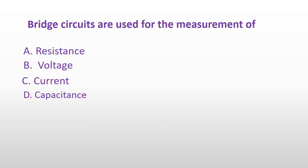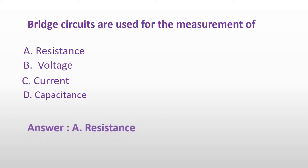Wheatstone bridge circuits are used for measurement of: Option A: Resistance. Option B: Voltage. Option C: Current. Or Option D: Capacitance. And the answer is Option A: Resistance.